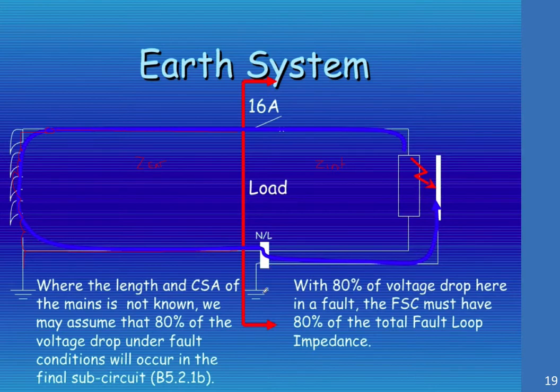Where the length and cross section of the mains is not known, we may assume that 80% of the voltage drop under the fault condition will occur in the final sub circuit. Basically we're saying we may not know what this is. Effectively we're assuming that the supply authorities will only limit the current by 20% with their transformer impedance.